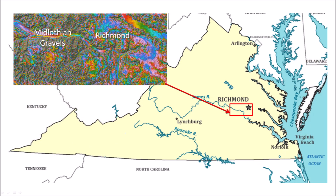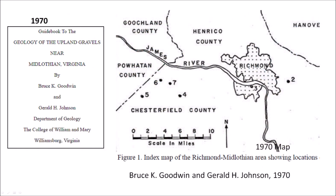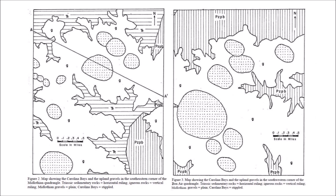Today we will examine the terrain around Richmond, Virginia and the Midlothian gravels which are 15 kilometers west of Richmond. Goodwin and Johnson published a guidebook to the geology of the upland gravels near Midlothian, Virginia. They describe the gravel beds as ranging from 0 to nearly 40 feet in thickness and consisting of abundant pebbles and cobbles in a sandy matrix containing variable amounts of clay. Cobbles up to 9 inches in diameter can be found, but the average cobble measures 2 to 3 inches in diameter. Goodwin and Johnson provided a map showing the Carolina Bays and the upland gravels in the southeastern corner of the Midlothian and Bonaire Quadrangles.